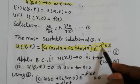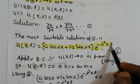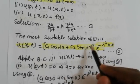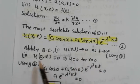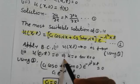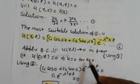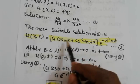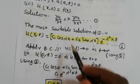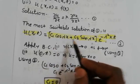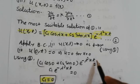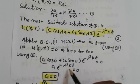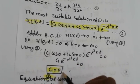Applying boundary condition (1): u(x,t) → 0 as t → ∞. Putting t → ∞ in equation (2), the exponential term goes to zero, which is satisfied. For boundary condition (2), u(0,t) = 0: substituting x = 0 into equation (2), we get c₁ cos 0 + c₂ sin 0 = 0. Since sin 0 = 0 and cos 0 = 1, we obtain c₁ = 0.